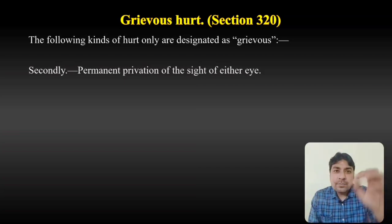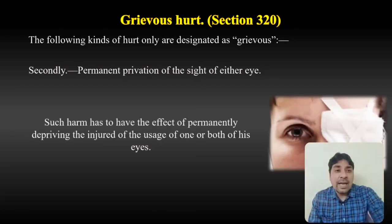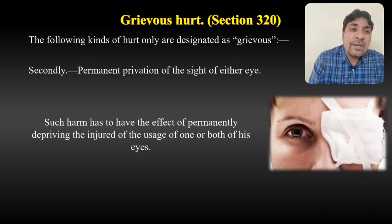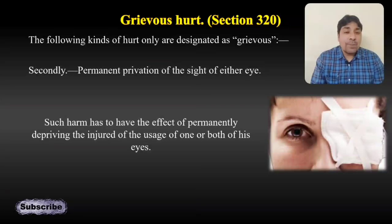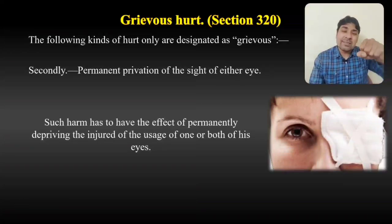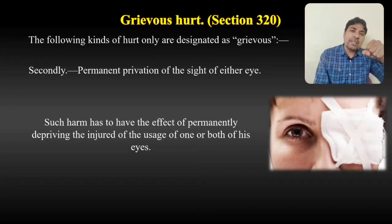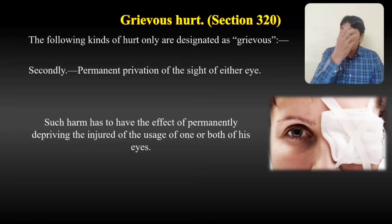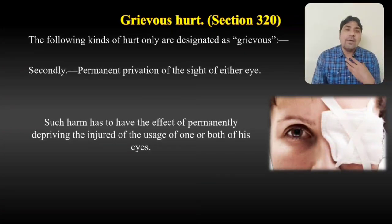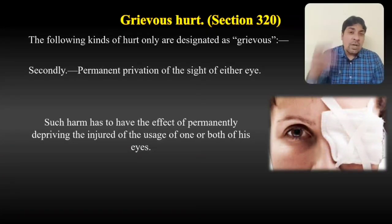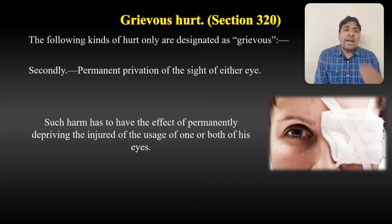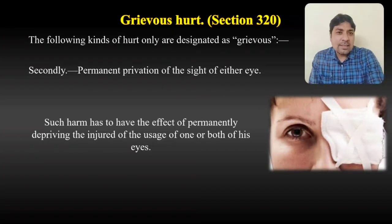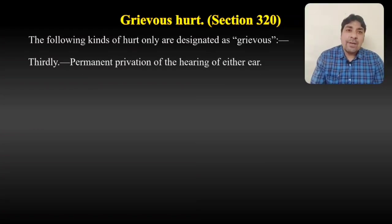The second type of grievous hurt is permanent privation of the sight of either eye. Such harm has to have the effect of permanently depriving the injured of the usage of one or both of his eyes. For example, if I punch someone on the eye and permanently damage their eyesight in one or both eyes, I will be liable for the offense of grievous hurt.